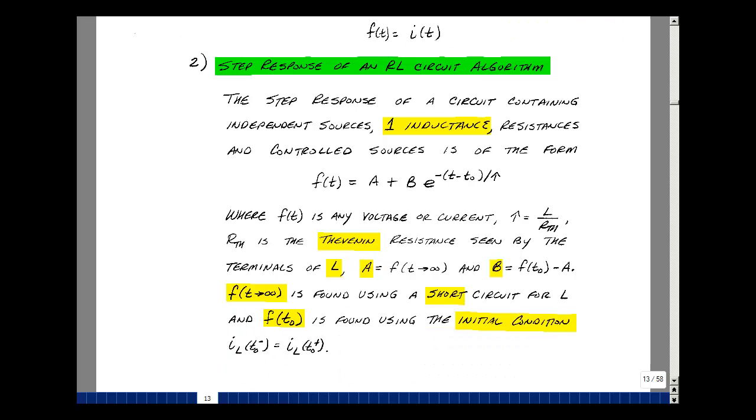As we did previously, let's state this as an algorithm. So we have the step response now of an RL circuit. And this would be for a circuit that contains independent sources, but only one inductance, resistances, and control sources, and is the form of a general first-order differential equation, which is some A plus B times E to the minus quantity T minus T0 over tau.